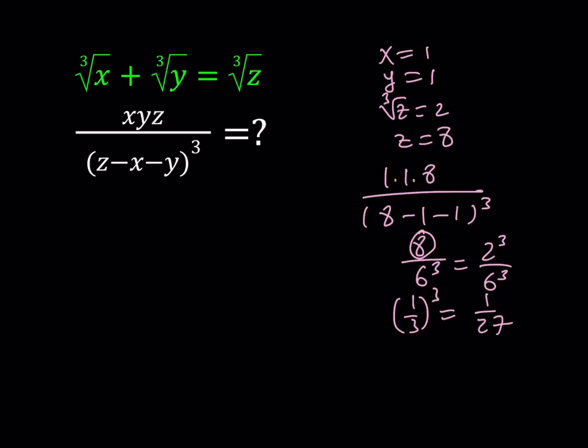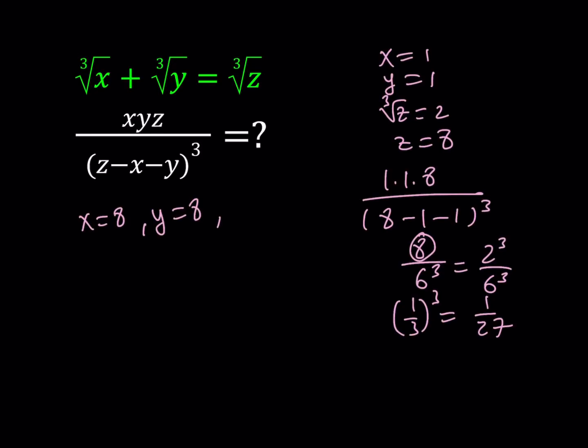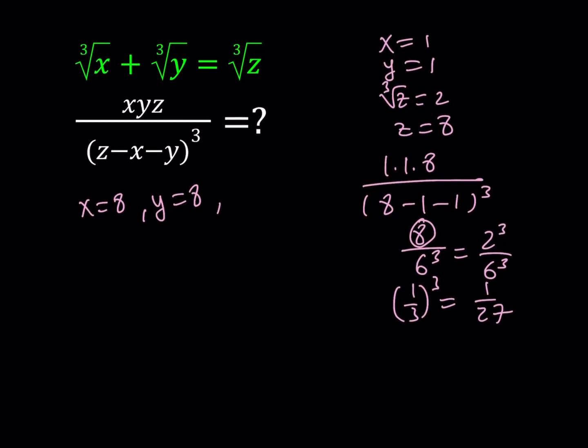Now, we could also use different values. For example, if x equals 8 and y equals 8, then we're going to be getting 2 plus 2, which is going to be 4. And then from there, the cube root of z is going to equal 2 plus 2, which is 4. And the cube root of z equals 4 is going to give us z equals 64. So that's another solution.